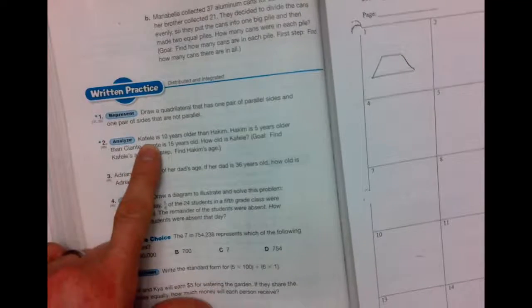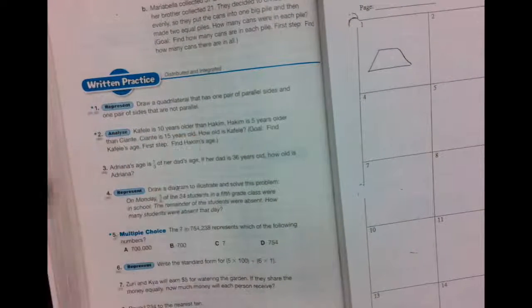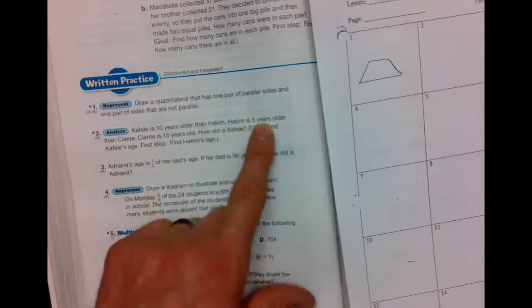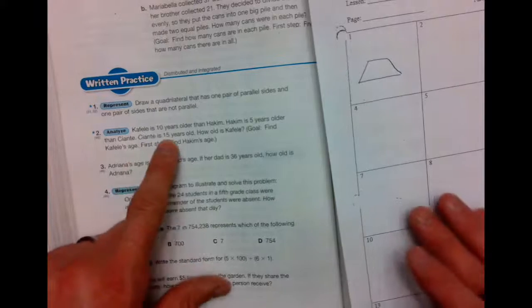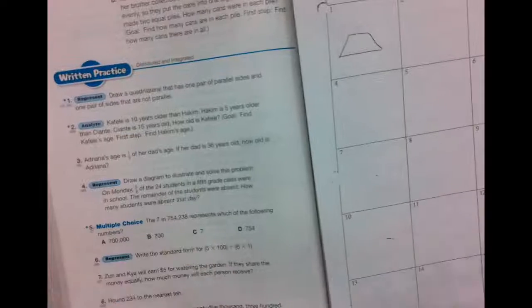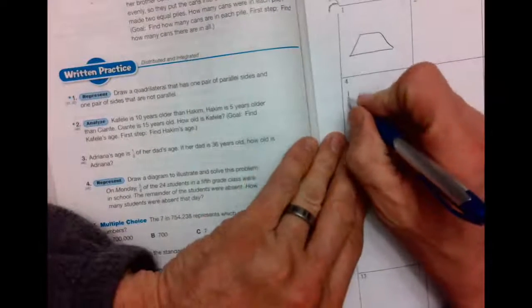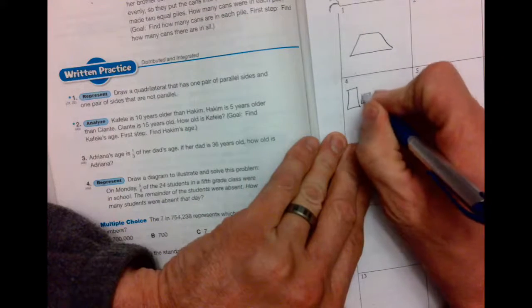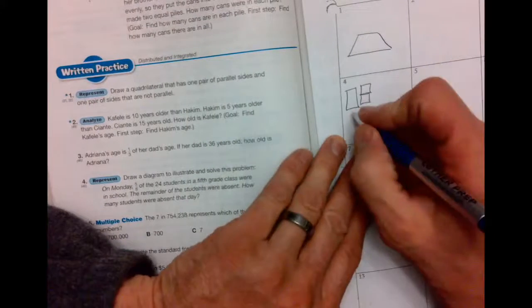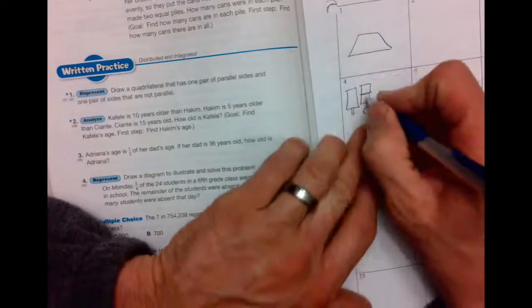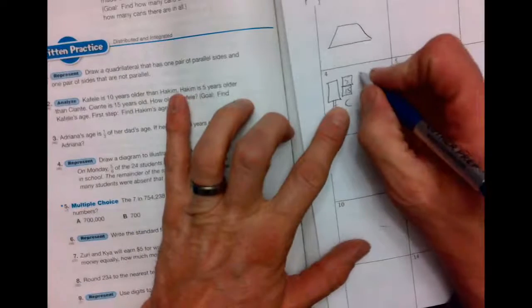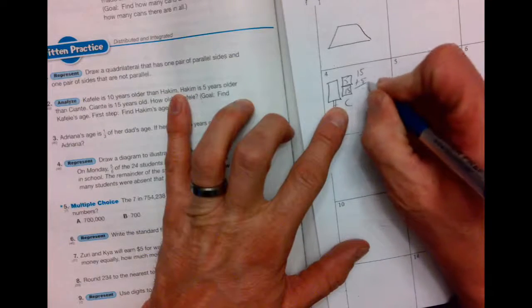Number two, it says Kefele is 10 years older than Hakim. Hakim is five years older than Siente and Siente is 15 years old. So we know Siente and we know Hakim is compared to Siente. So let's go and do those first. We got our three boxes and the older one, Hakim, is five years older. So here's Hakim and here's Siente. Siente is 15 and the difference was five.